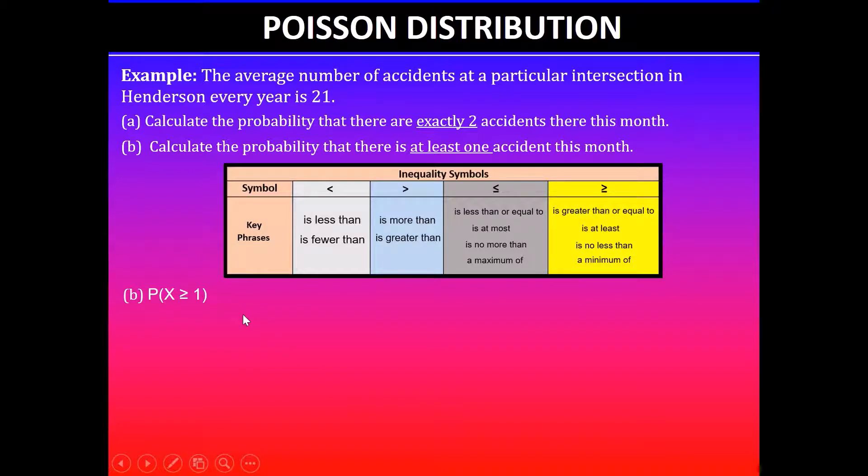Zero implies no accidents, and then zero, one, two, three, four, five accidents, etc., and this goes to infinity, infinite number of accidents at that particular intersection, which is unknown.